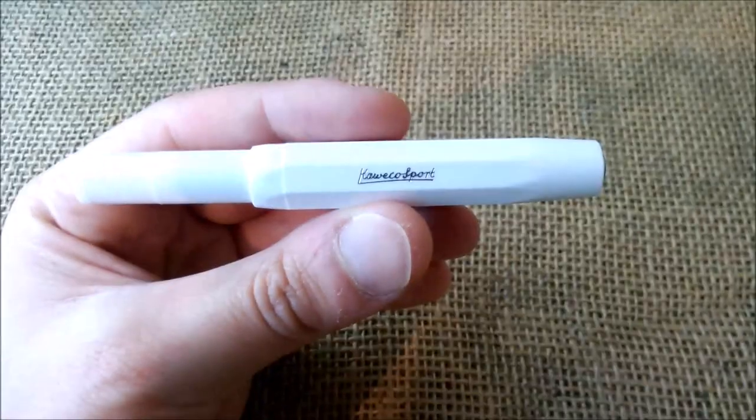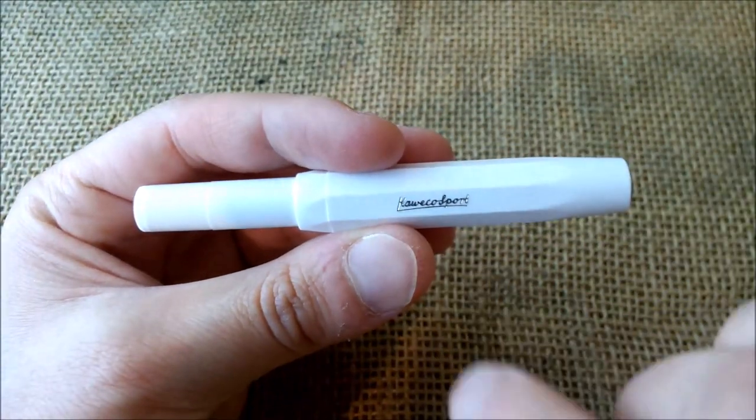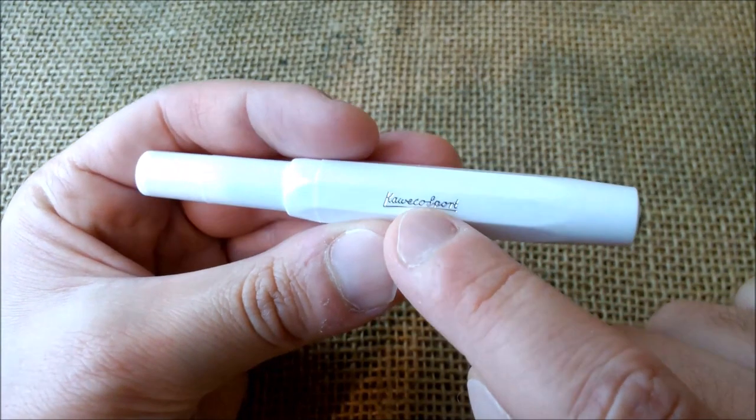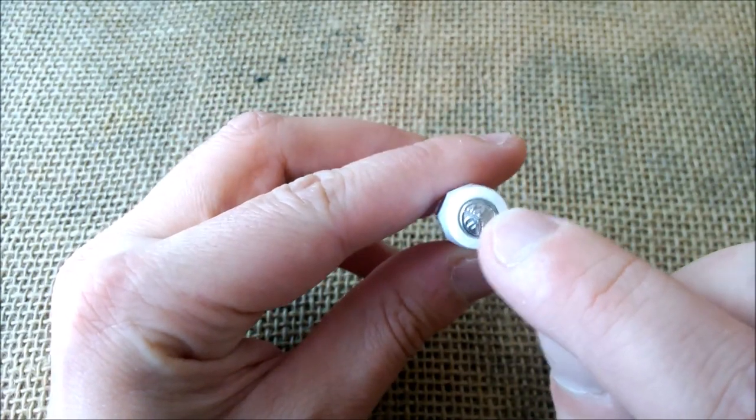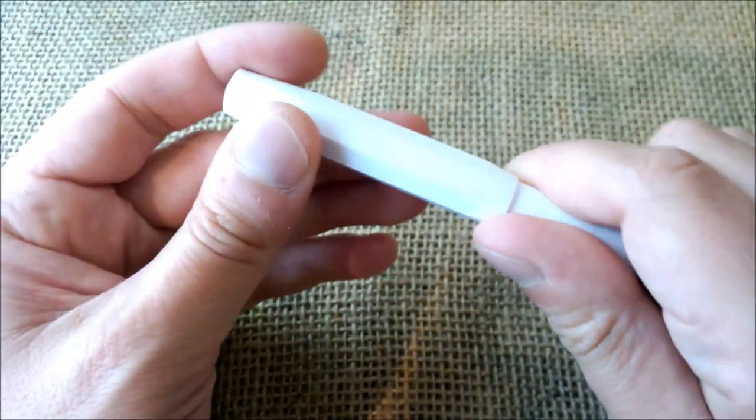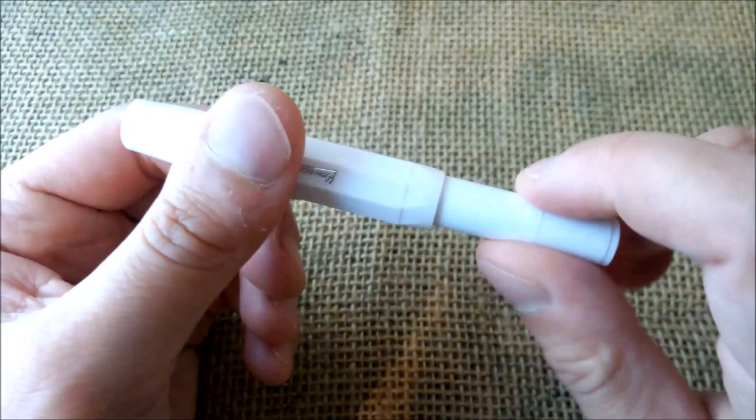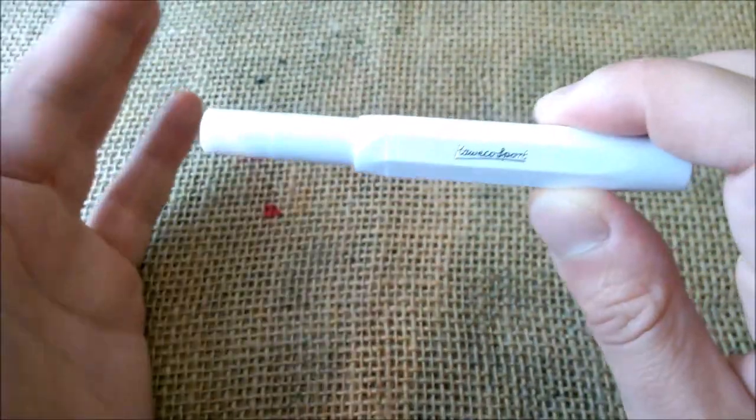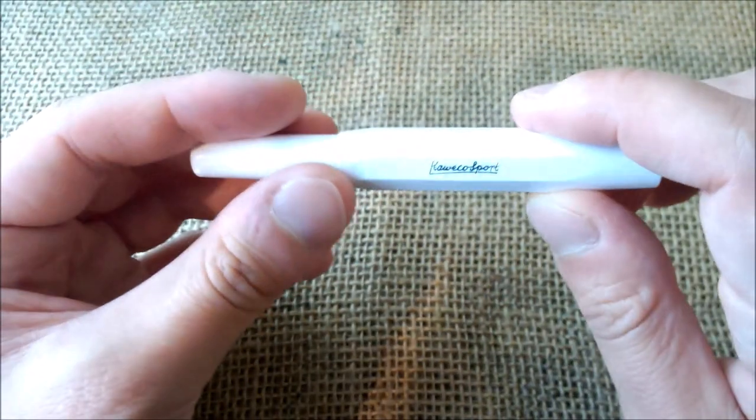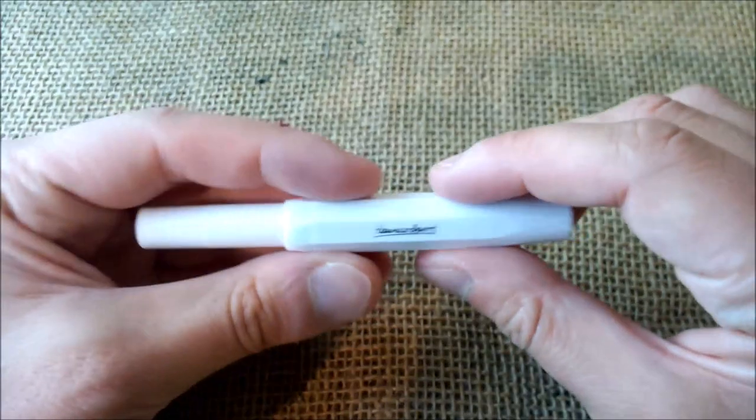This pen is similar to every other Kaweco Sport. It is a plastic one, it is the Skyline series which means that the imprint on the cap that says Kaweco Sport, also the medallion on the top of the cap and the nib, they are all silver colored. This one is not easy to see because it's quite hard to light up this scene with such a white pen.